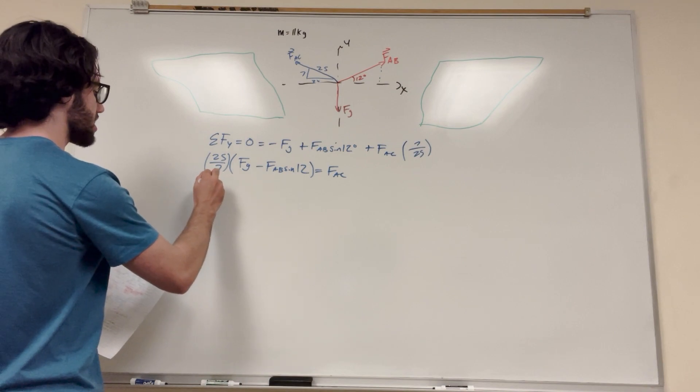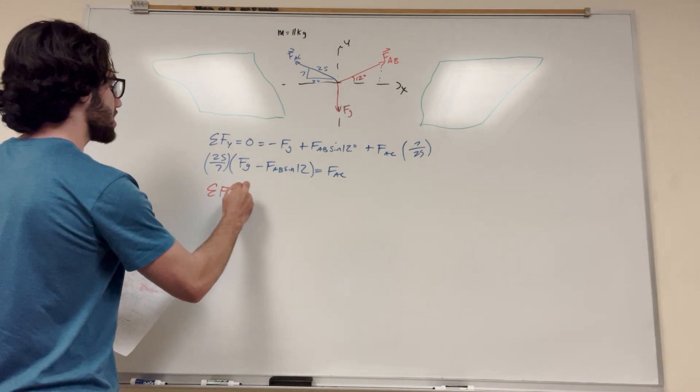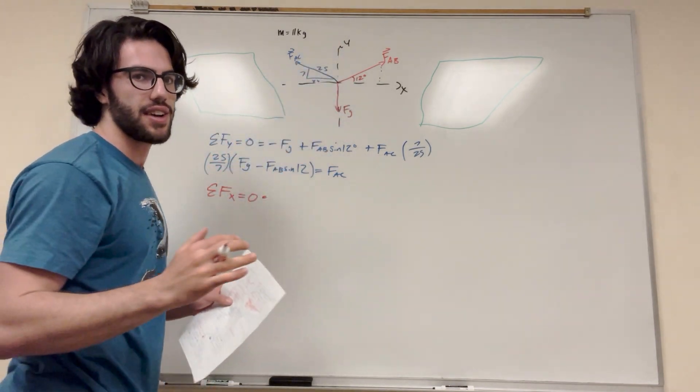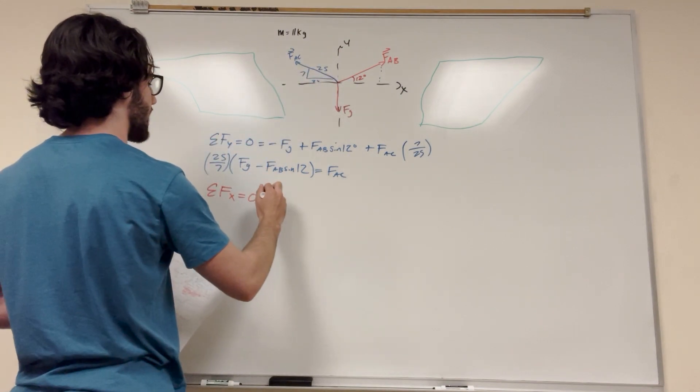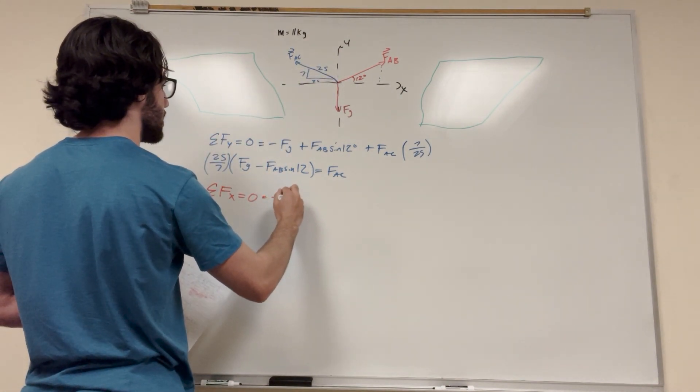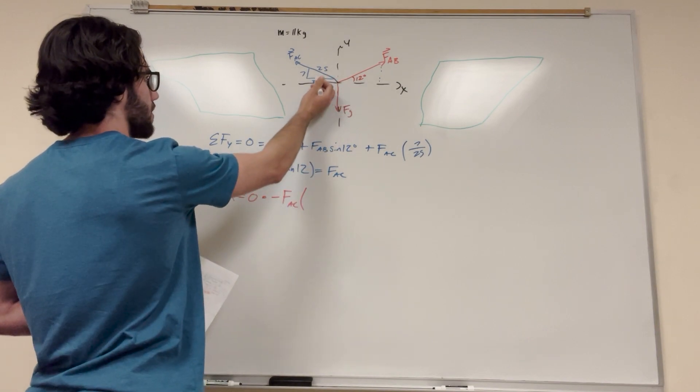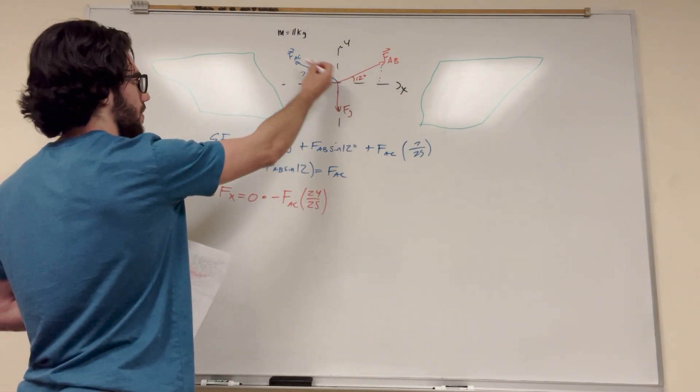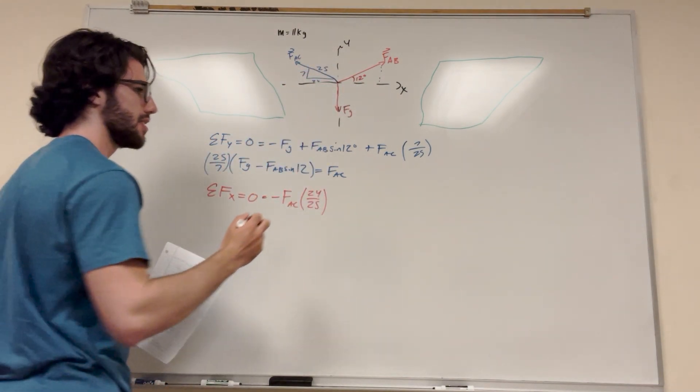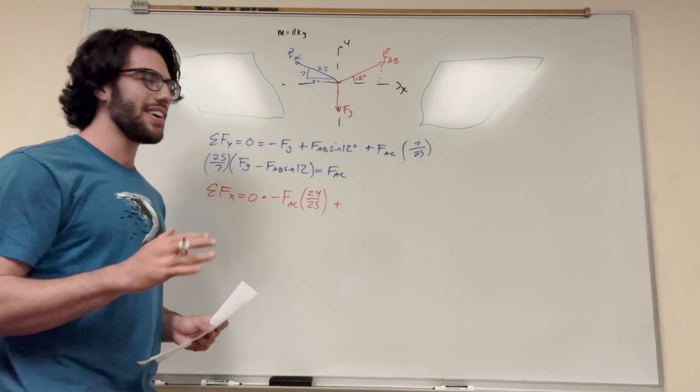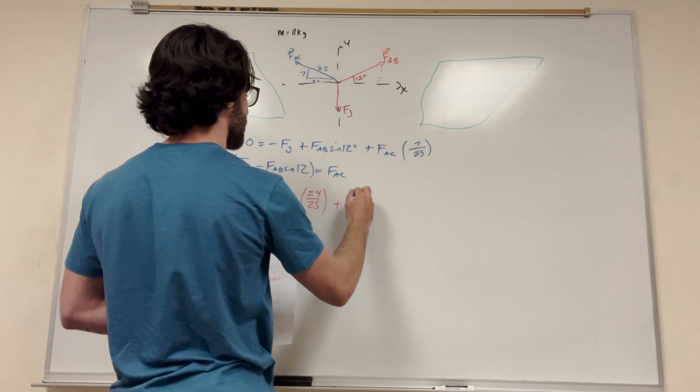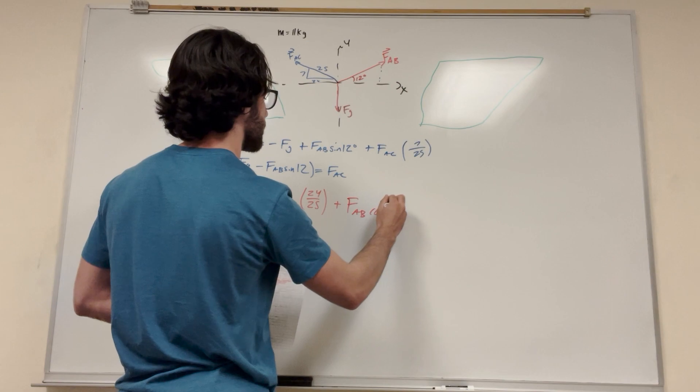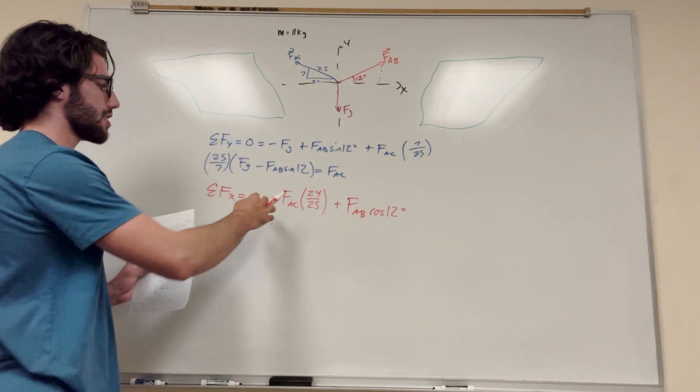So let's do force in the X direction. Sum of forces in the X direction is also equal to zero. We're at equilibrium. So let's look at it. Force gravity is going straight down. There's going to be no force gravity on this. We don't have to worry about it. So force AC is negative, so it's going to be negative force AC. And then we know it's 24 to 25, so 24 over 25. That gives us the ratio of the total force pulling in the X direction. All right, we just had a visitor, but let's keep going. Force AB, it's going to be plus force AB. It's pulling in the positive direction. Cosine of 12 this time.